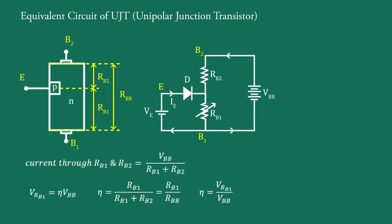Eta is called the intrinsic standoff ratio of the UJT. The value of eta lies between 0.51 to 0.82.